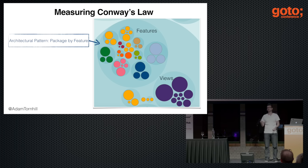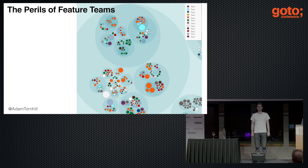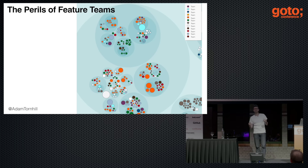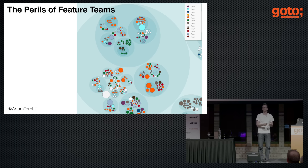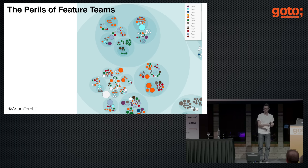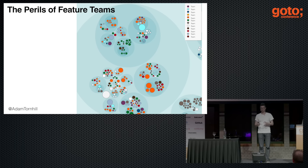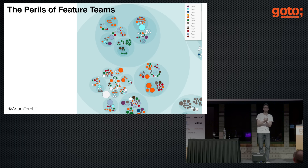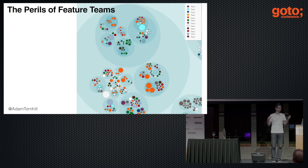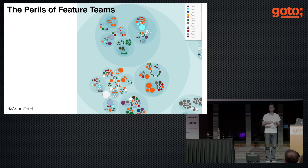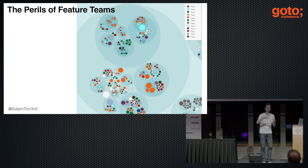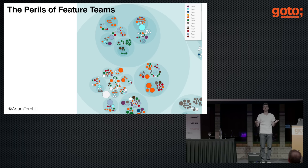Here's a different real-world case study — the perils of feature teams. Feature teams can work really well if your architecture supports that way of working. If not, you can end up with 12 different teams where it's very hard to find any patterns. In most cases, it's basically collective chaos — a communication breakdown because you consistently need to coordinate the work and actions of 12 different teams in the same parts of the code. It's not going to end well.